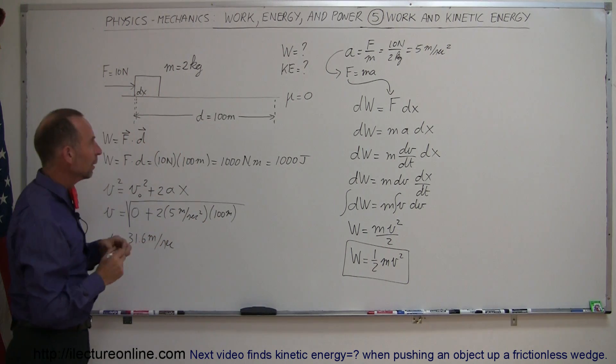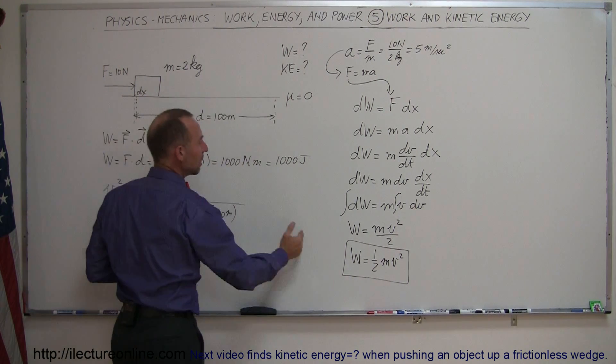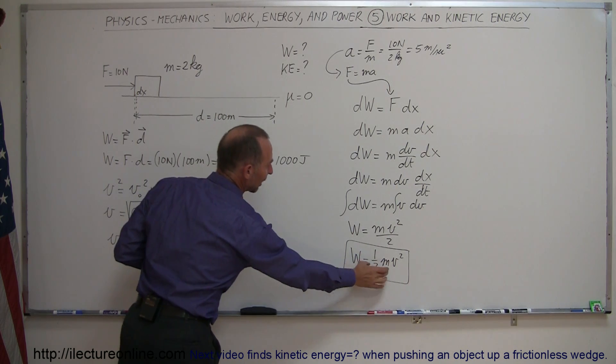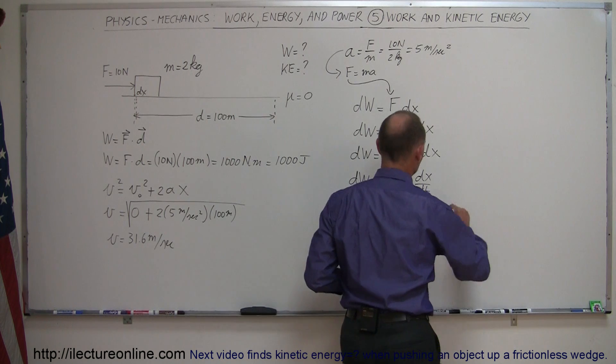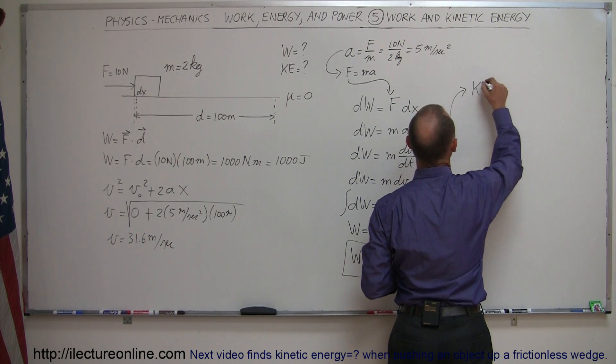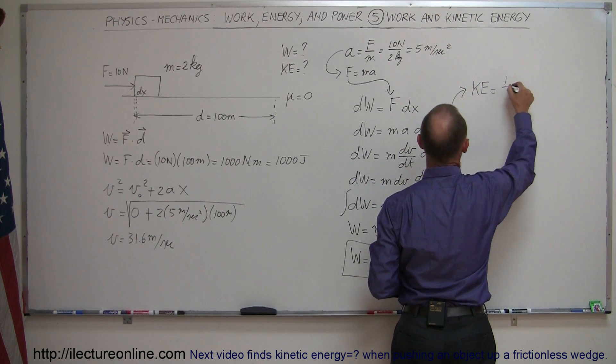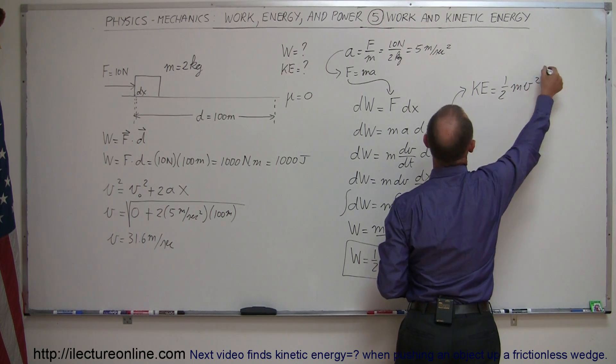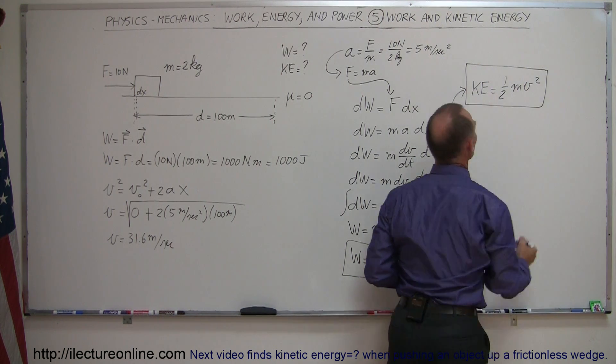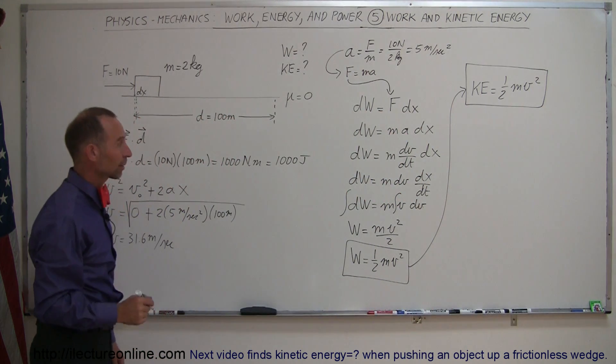So that would be the work required to move that block from here to there. In that case, it will have gained a certain amount of velocity, and that way that work is then turned into kinetic energy, so by definition we can say that this work will then become the kinetic energy of the object, which is equal to one half mv squared, and now we have the definition of how to calculate kinetic energy of an object.